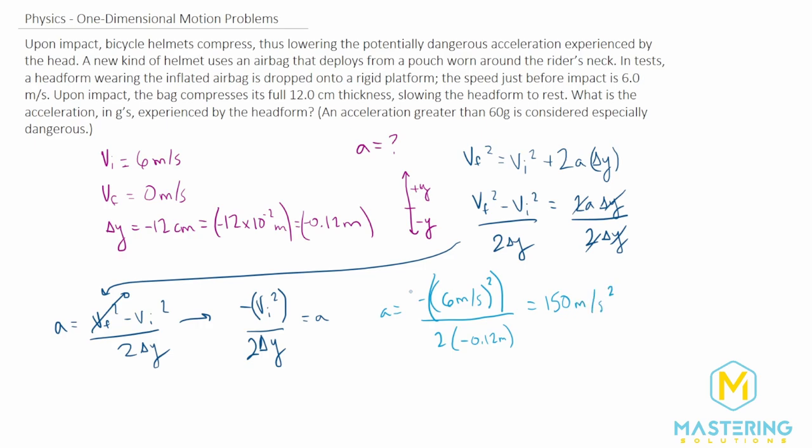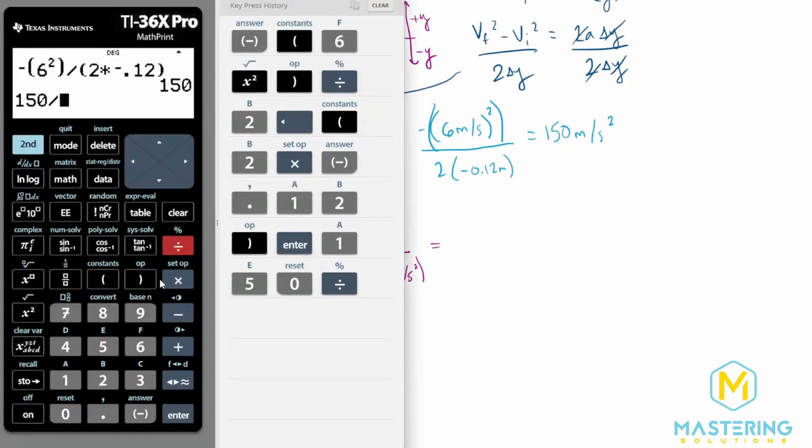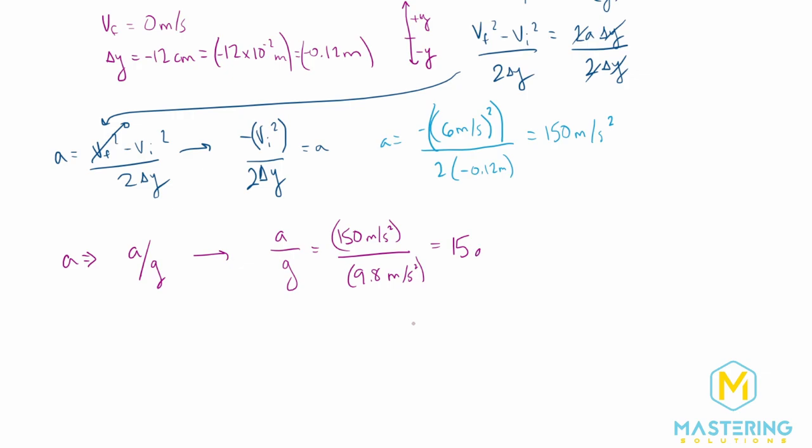Now they say we have to give it in G's. I want to take the answer we just got for acceleration. To put it in G's, we divide the acceleration by G. So a over G equals 150 meters per second squared. Dividing by 9.8 meters per second squared gives us 150 divided by 9.8, which is 15.3, so 15 G's. This is a ratio, meaning how many times gravity is the acceleration we got.